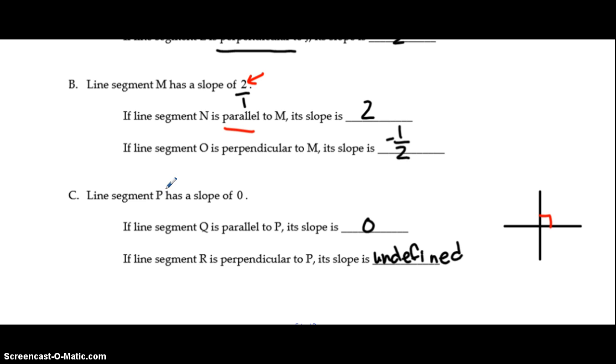For the last one, line segment P has a slope of 0. So this guy right here is line segment P, a horizontal line. A parallel line would have the same slope, also 0. But horizontal and vertical lines are opposite reciprocals of one another or they're perpendicular to one another. So we know that the opposite reciprocal slope would have to be undefined.